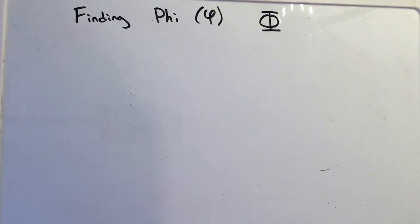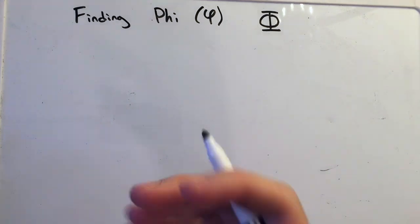Finding phi. Now phi is an irrational number that goes on forever and ever and it's known also as the golden ratio.